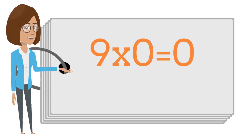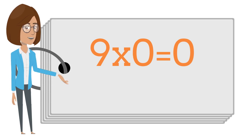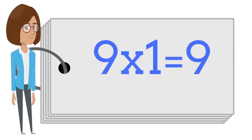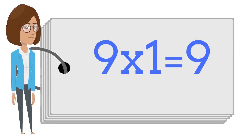Nine times zero is zero. Nine times one is nine.